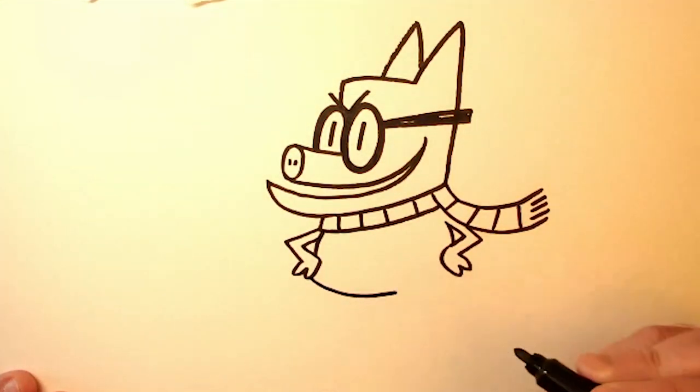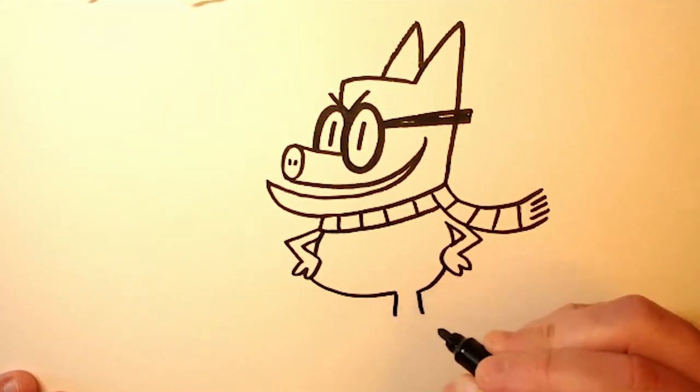Now we'll finish off his body, which is nice and round. And then two little legs sticking out the bottom.